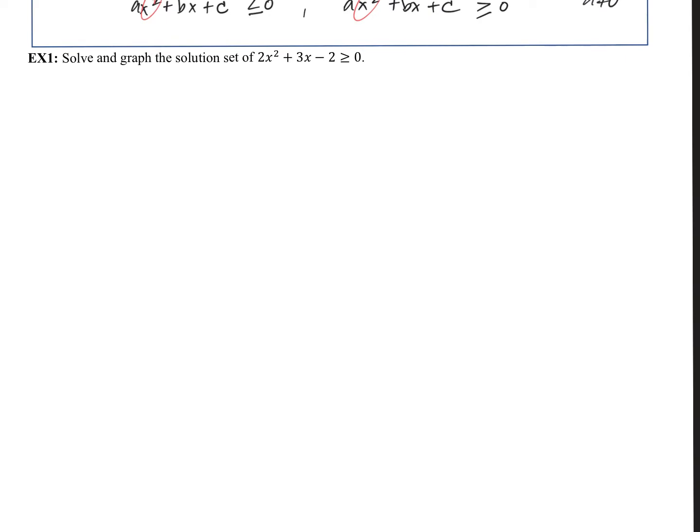Let's take a look at Example 1. Solve and graph the solution set of 2x squared plus 3x minus 2, greater than or equal to 0. One of the main things you want to look for are the inequality signs — when you see that, know we're going to need to do some test points. The first thing we want to do is find our critical values.